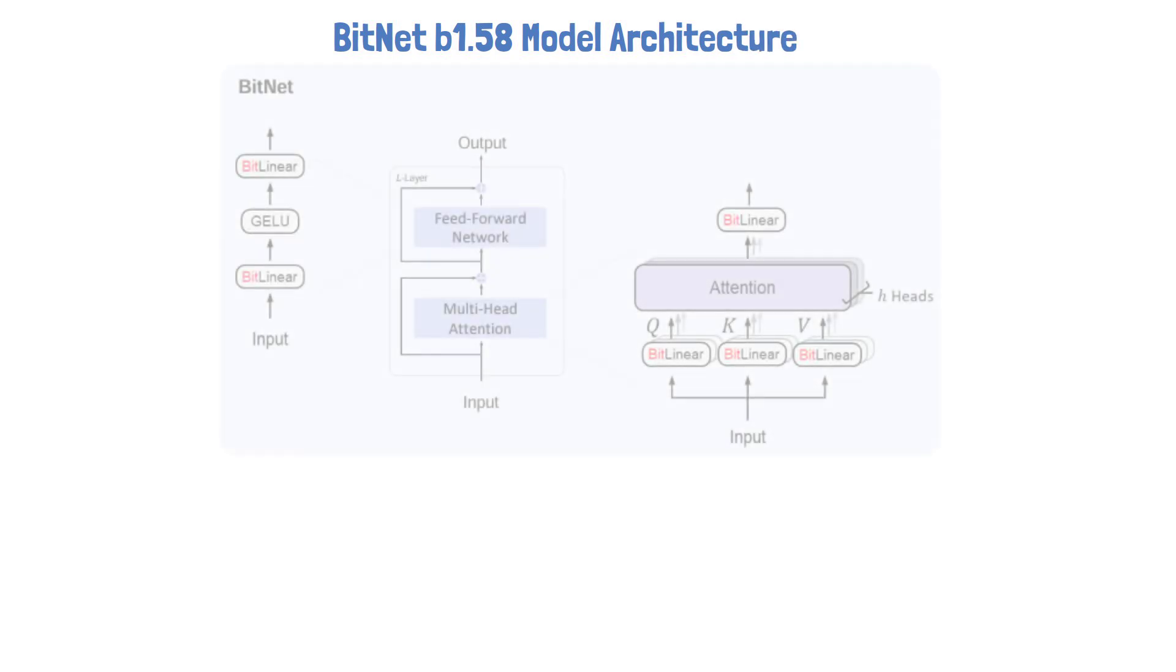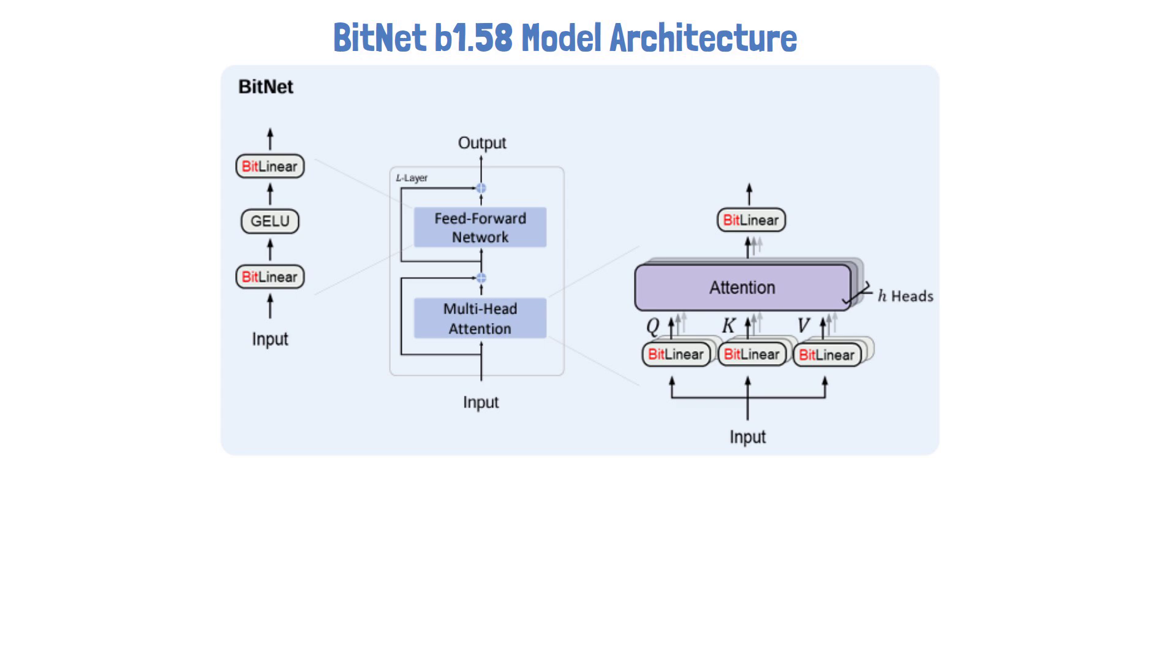Let's now dive a bit deeper into how the model is built. The following figure is taken from the original BitNet paper, which has a similar architecture to the BitNet b1.58. We can see that the model architecture has the same layout as transformers, stacking blocks of self-attention and feedforward networks. But instead of the regular matrix multiplication, we use BitLinear, which is in charge of limiting the model weights to the possible values.